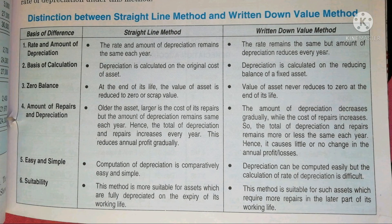Under the Straight Line Method, the rate and amount of depreciation remains the same each year, because we calculate the depreciation on the cost value of assets. In this way, the rate and amount of depreciation remains the same each year.